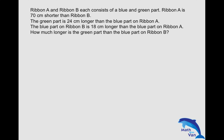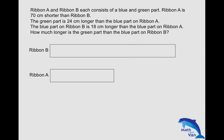Let's take a look. The first sentence: basically both ribbons would have blue and green parts. Ribbon A is 70 cm shorter than Ribbon B — just draw the model, so B is longer than A by 70 cm. We know that on Ribbon A the green part is longer, so blue is shorter and green is longer. This is how it would look like.